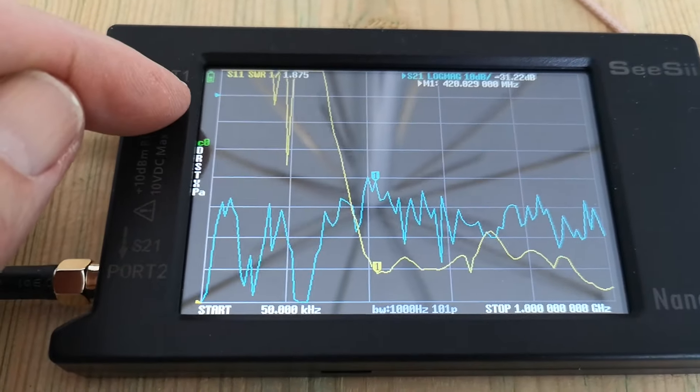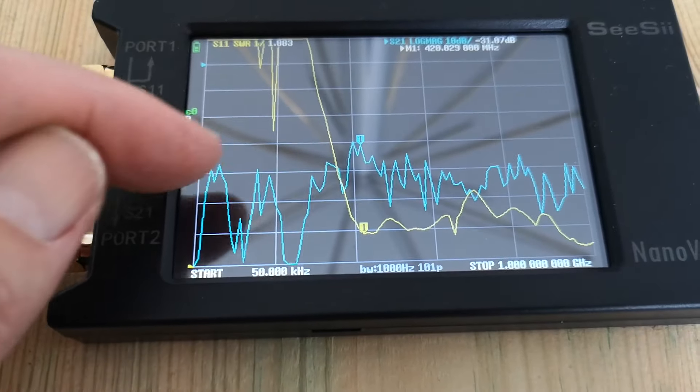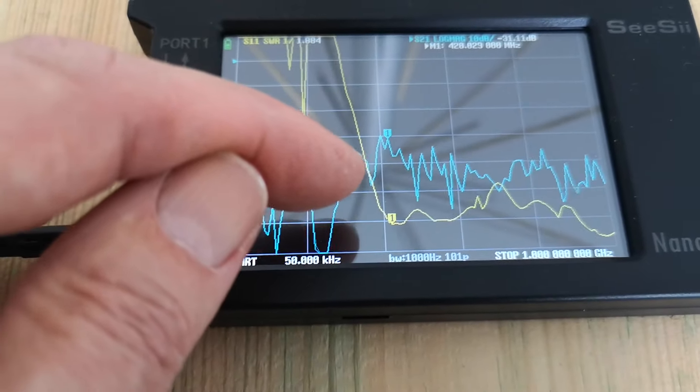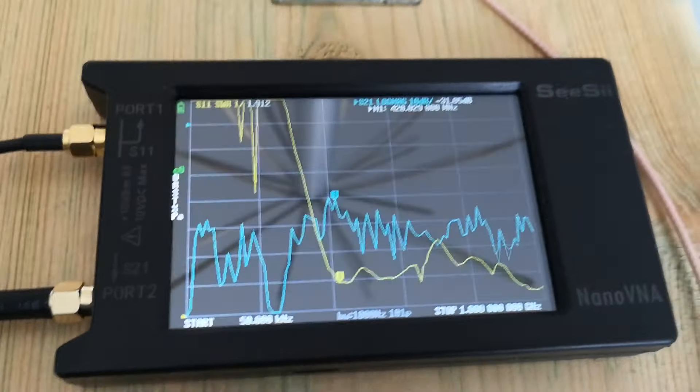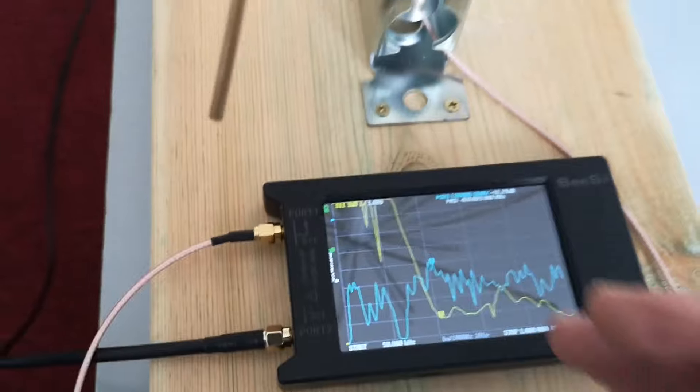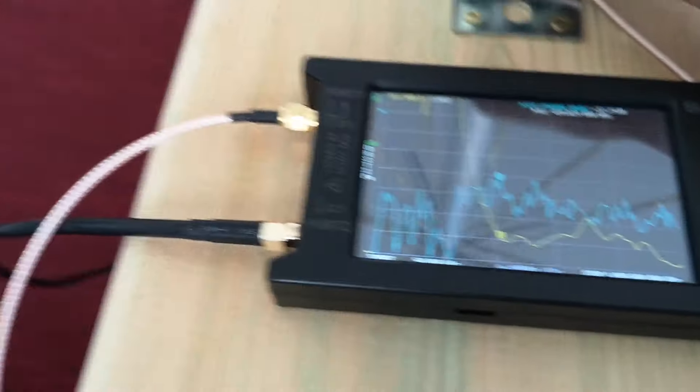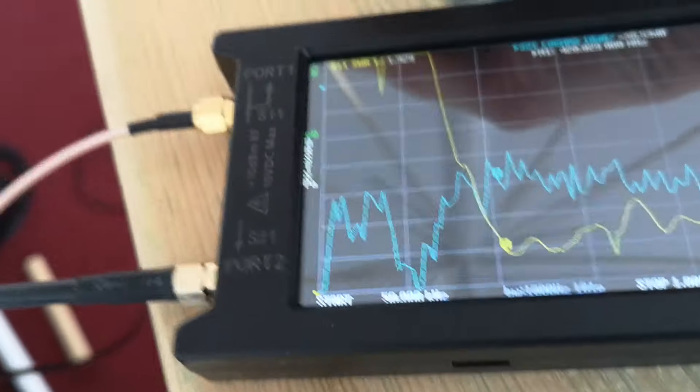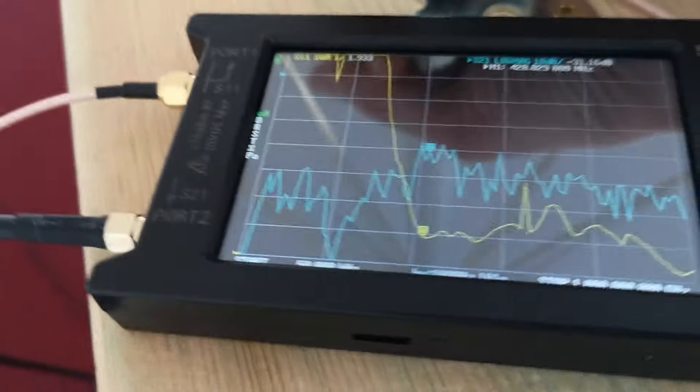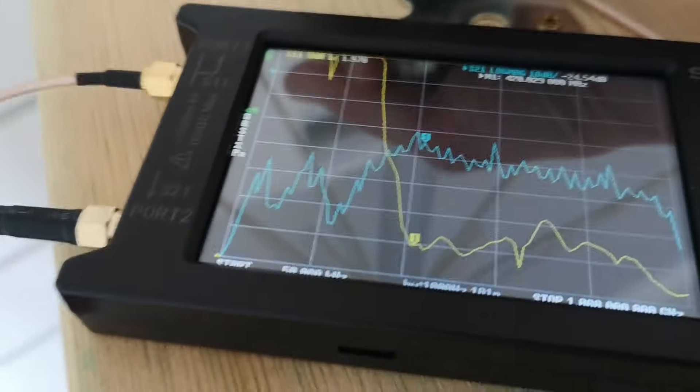And this is 10 dBs per division from here, so it's 10, 20, 30, 40 dBs down is the loss between 400 and something megs and 1 GHz. It's around 40 dBs. If I carefully pick all this up and take it closer to the other antenna, then we'll be able to see that the loss is decreasing, the blue line is moving up.